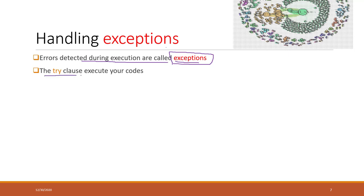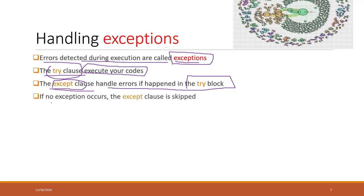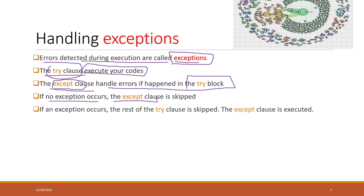We can use a try clause to execute your code. You put your normal code in the try clause where you think there might be some errors. After that, in the except clause, we can add additional actions to handle those errors. If some errors in the try block occur, we can handle that in the except clause. If there are no errors, the except clause will be ignored. However, if exceptions occur, the rest of the try clause will be skipped, and the except clause will be executed.